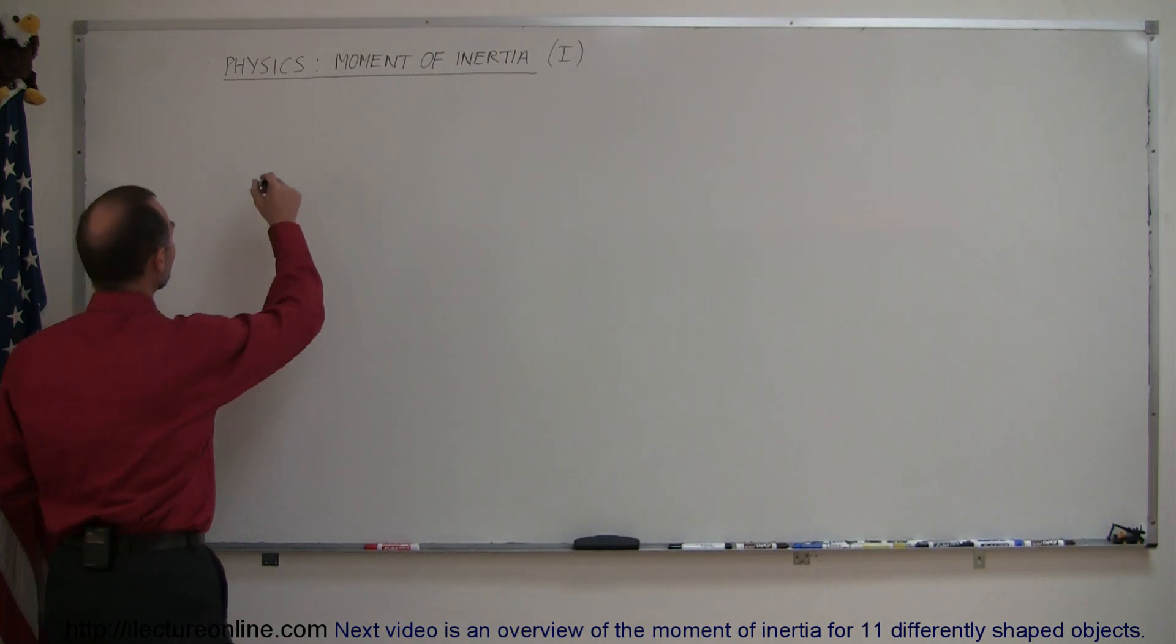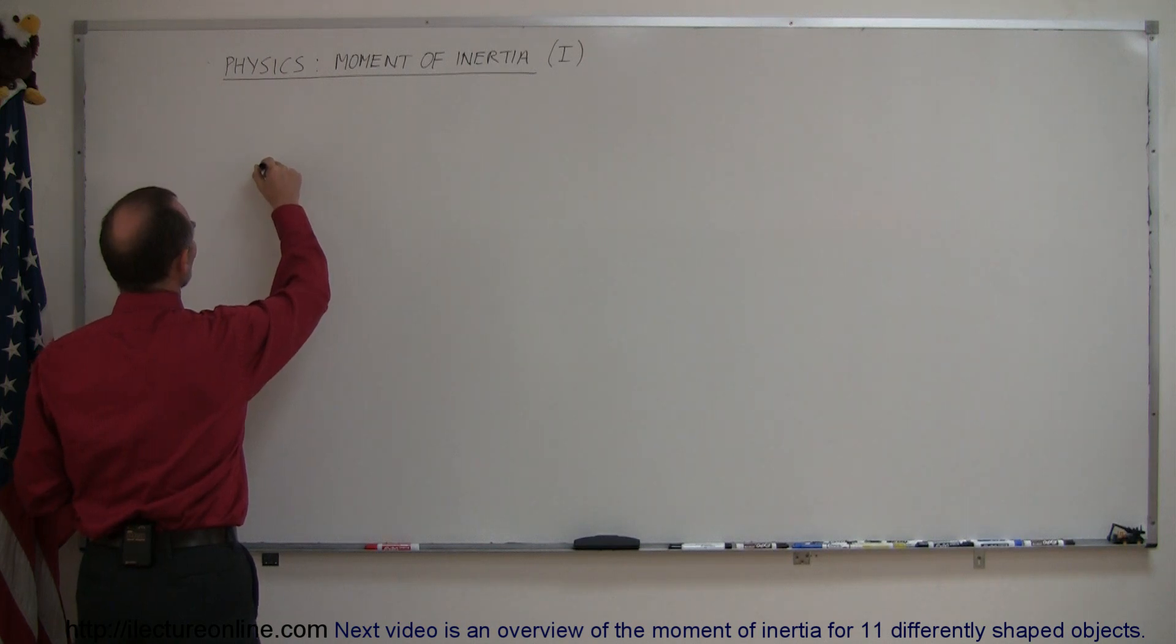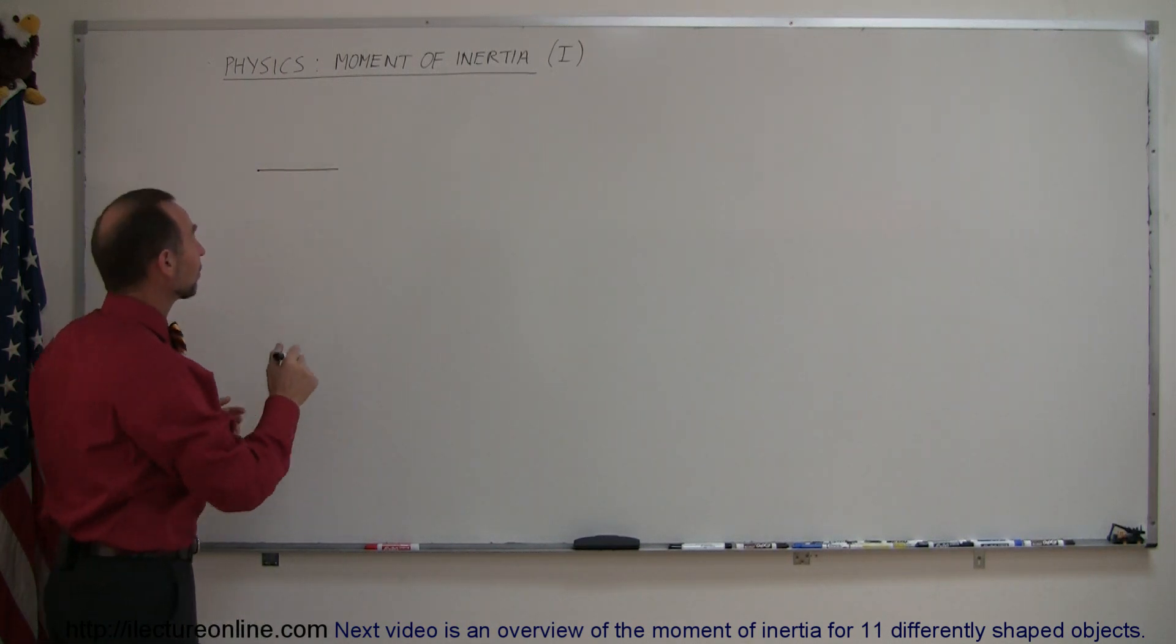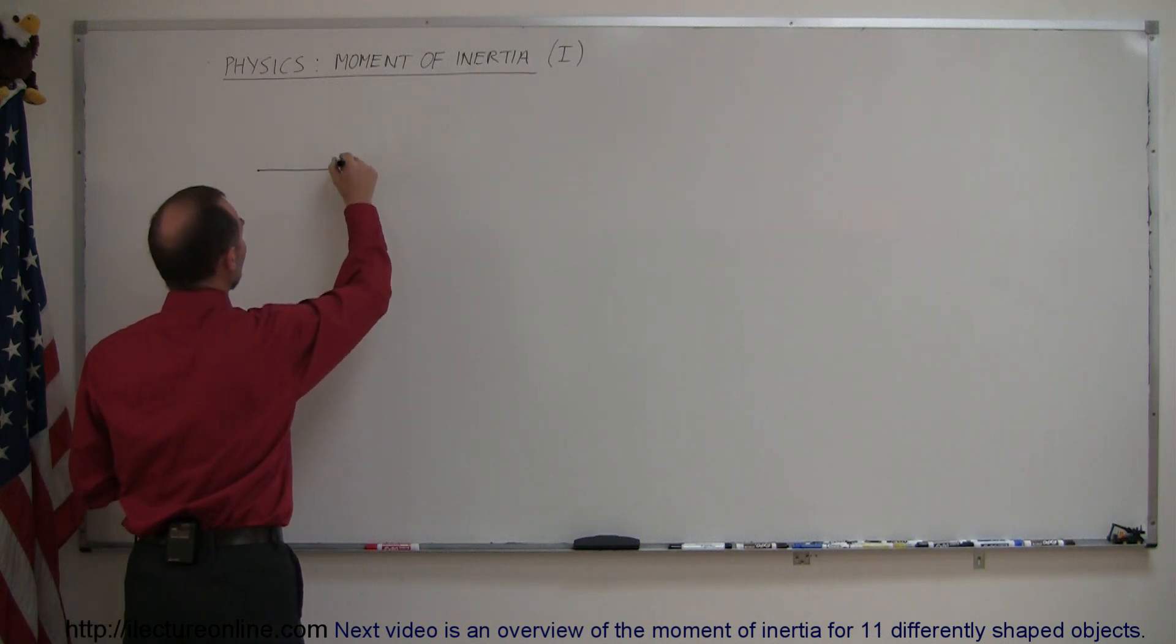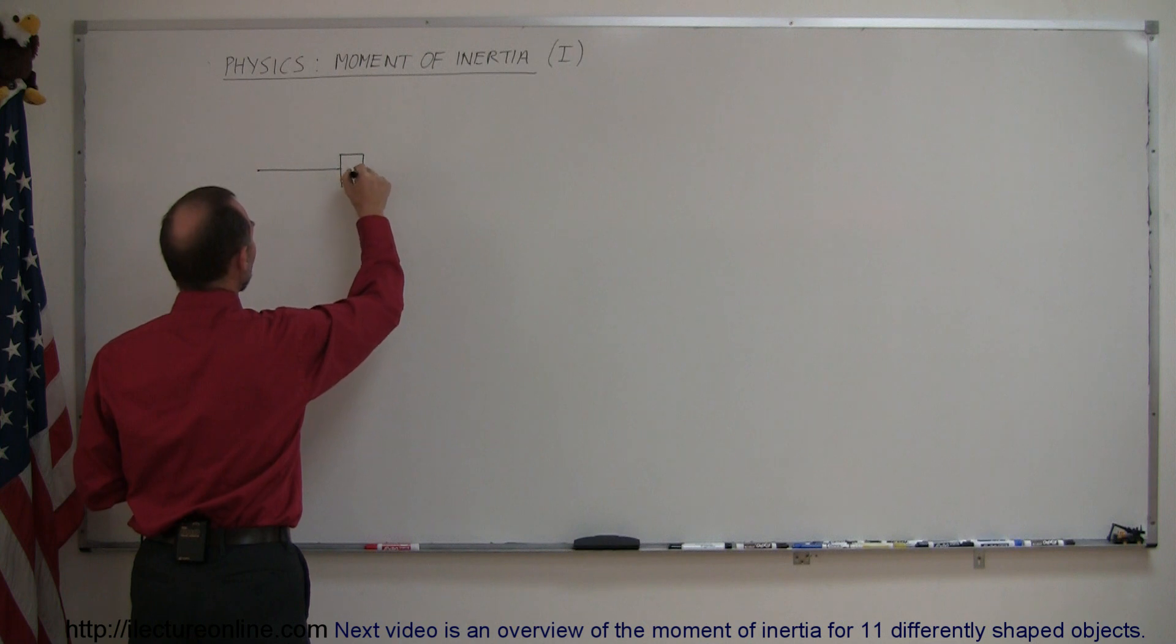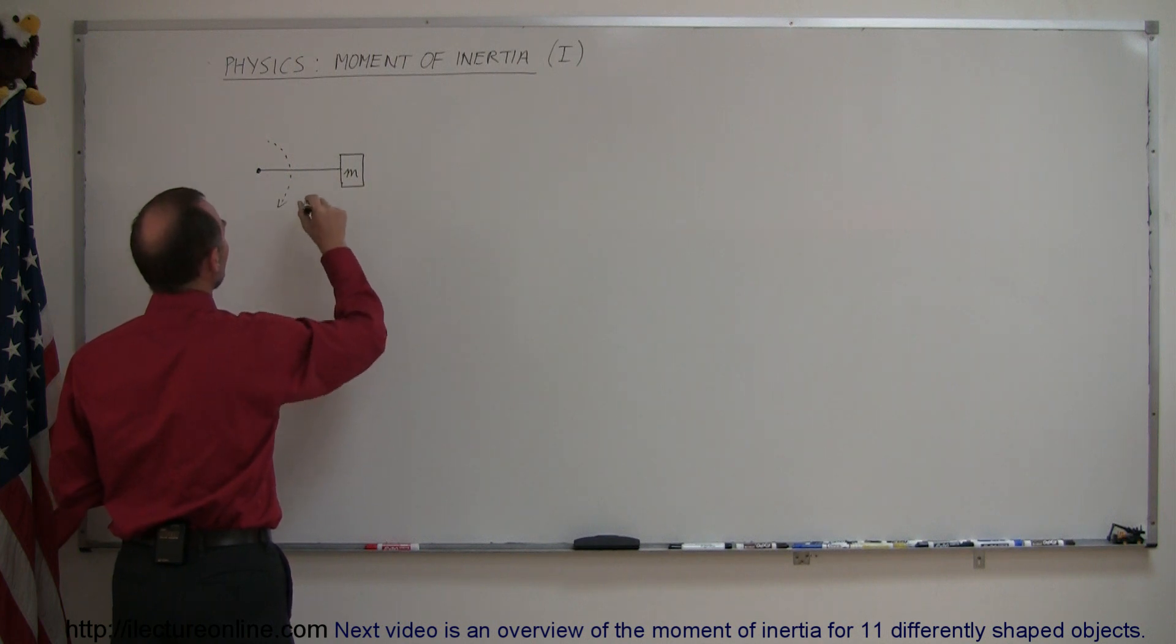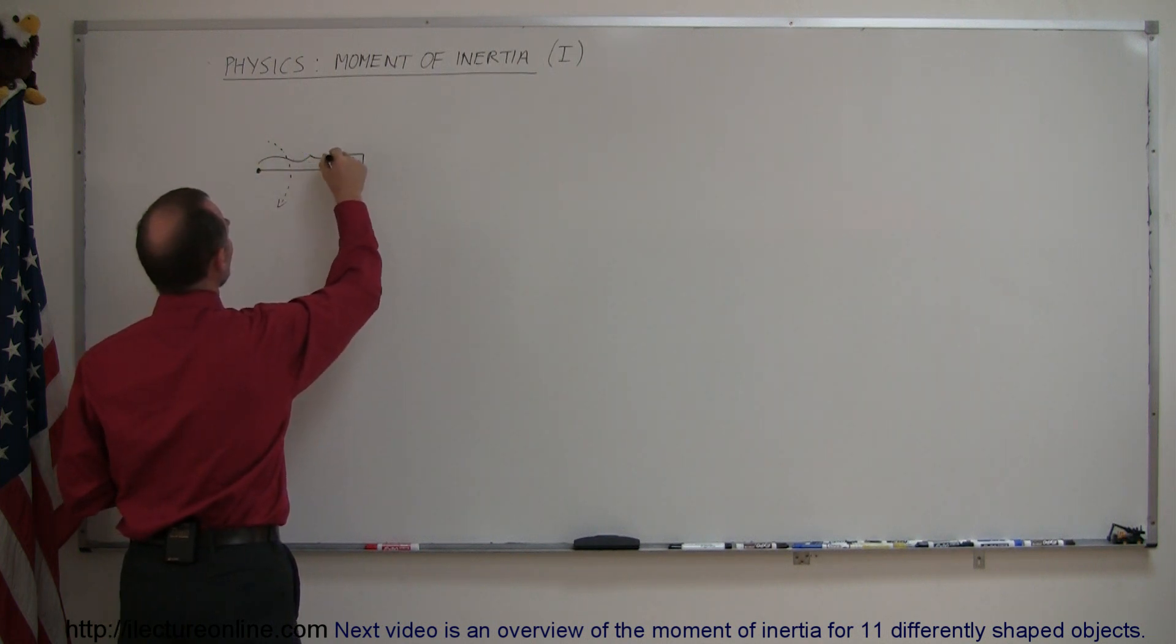So for example, if we have a small thin bar, so thin that we can ignore its mass, and then we suspend an object on the end of it with mass m, and let's say that this has the ability to rotate like so, and let's say that this has the length r for radius of motion.